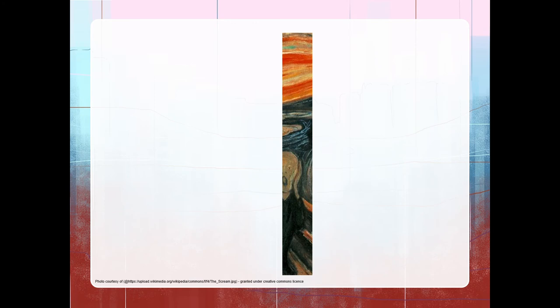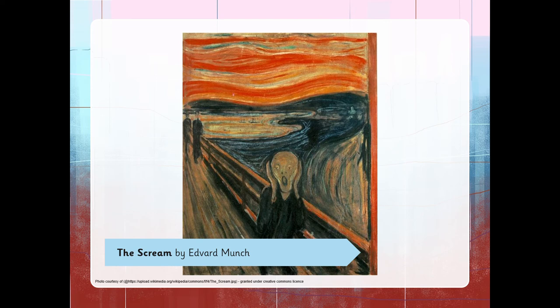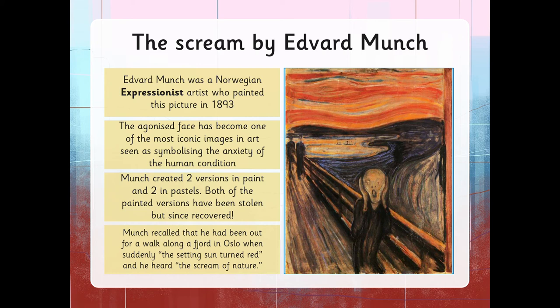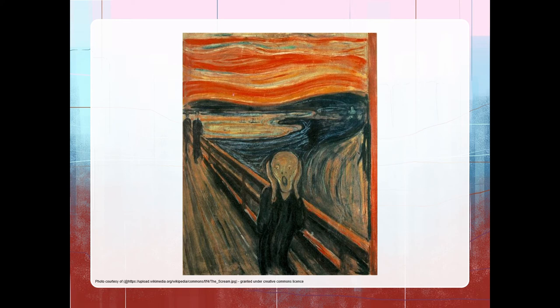Is this familiar? It's The Scream by Edvard Munch. Edvard Munch was a Norwegian expressionist artist who painted this picture in 1893. The agonised face has become one of the most iconic images in art, seen as symbolising the anxiety of the human condition. Munch created two versions in paint and two in pastels. Both of the painted versions have been stolen over the years but since recovered. Munch recalled that he had been out for a walk along a fjord in Oslo when suddenly the setting sun turned red and he heard the scream of nature. What do you think he meant? What do you think the swirling patterns mean? And look at the colours that have been used.